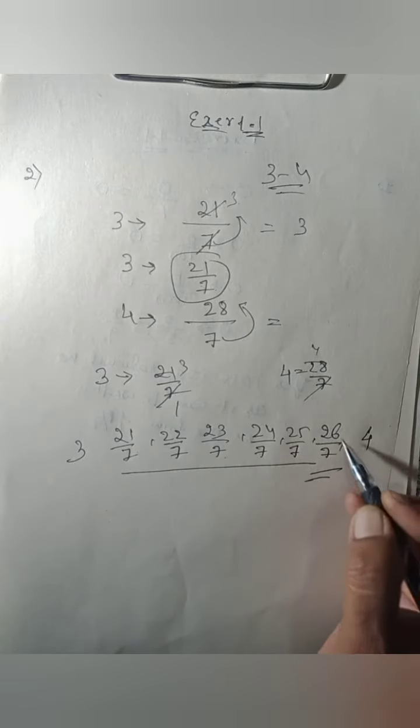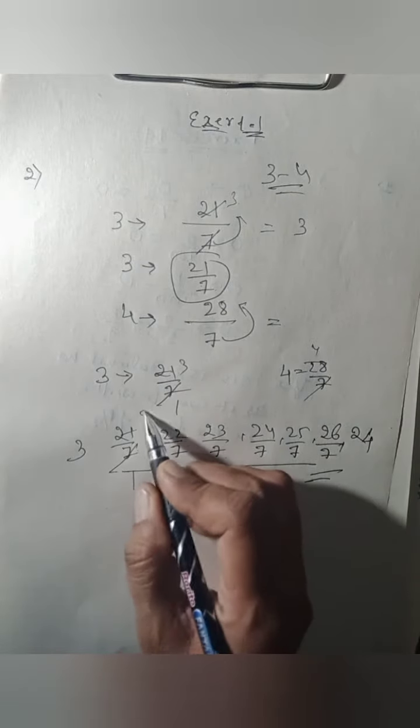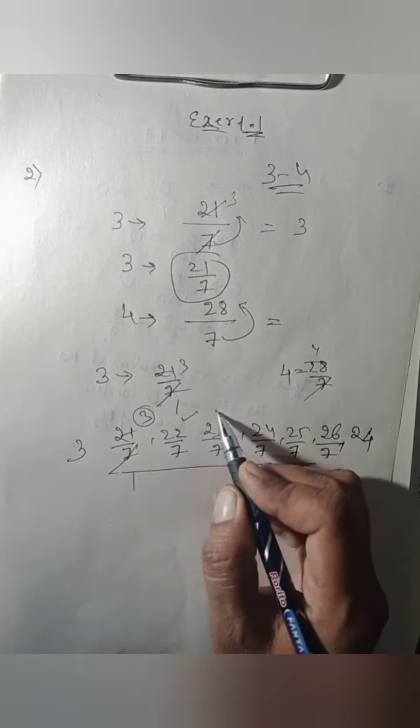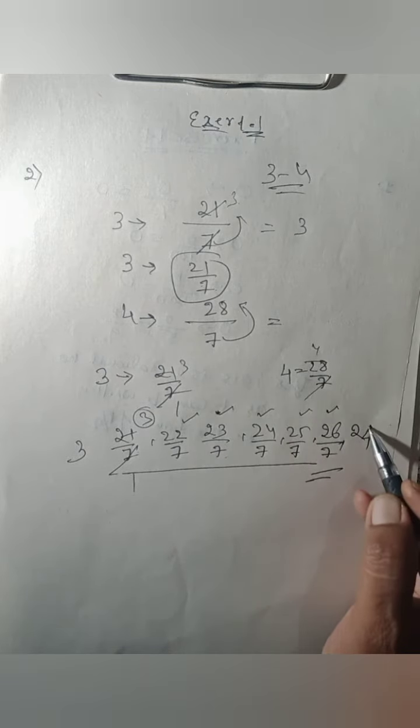You can go with one more because between 3 and 4 means it is 21 upon 7 and 28 upon 7. Starting from 3, this is not considered, 1, 2, 3, 4, 5. One more you want? 26 and you can write here 27 upon 7.